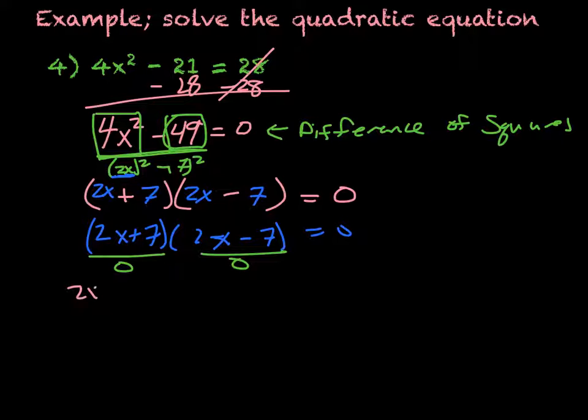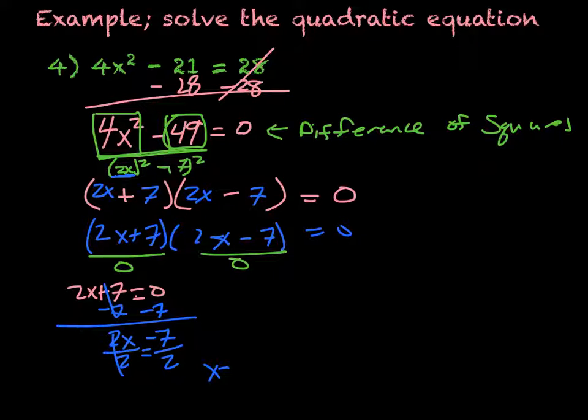So 2x + 7 = 0 is going to give me -7, 2x - 7, divide by 2, divide by 2, and x = -7/2. The other part is 2x - 7 = 0.